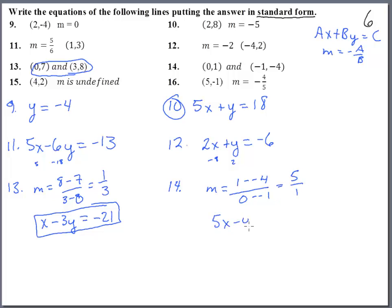5x minus y equals, and then we can stick in either one of these points and we should get the same number. Zero and one will give us negative one. If we stick in negative one and negative four, we get negative five minus negative four - it's still negative one. We have the standard form equation of the line.